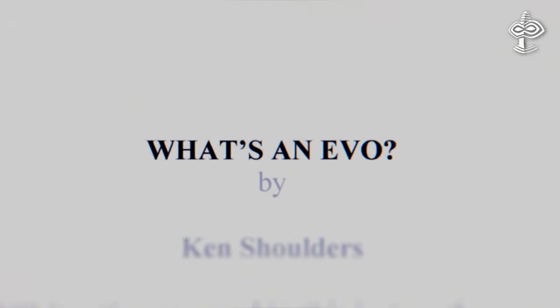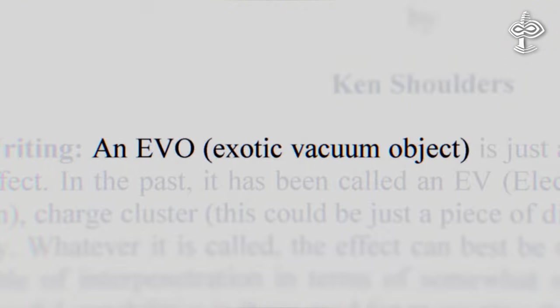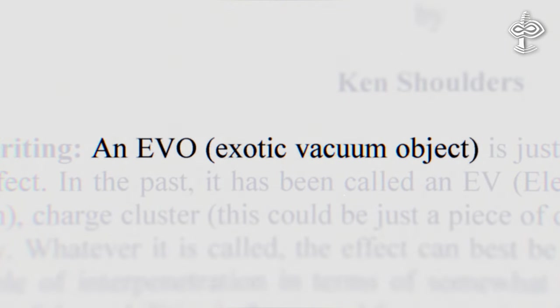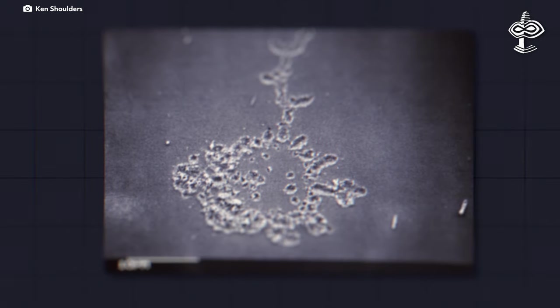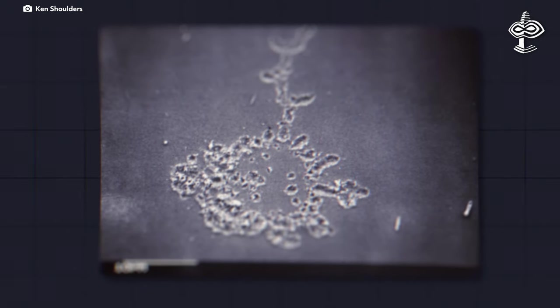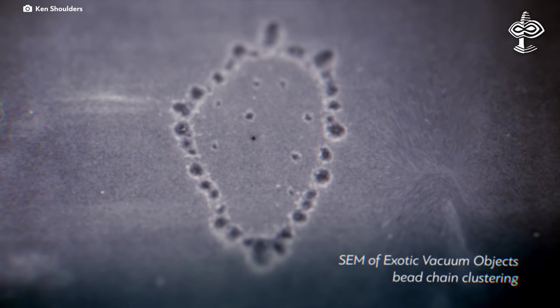This also reminds a lot of the properties of exotic vacuum objects. Special collective plasma states that once produced also stay in the materials, particularly metals, indefinitely and need extra energy supplied to be removed as described by Ken Shoulder's experimental work.